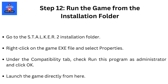Step 12: Run the game from the installation folder. Try running the game directly from the installation folder instead of through Steam or other launchers. Go to the STALKER 2 installation folder, right-click on the game .exe file, and select Properties. Under the Compatibility tab, check Run this program as administrator and click OK, then launch the game directly from here.